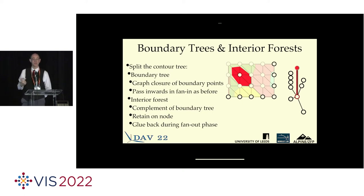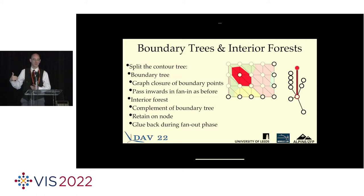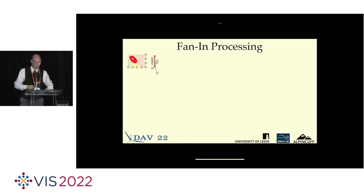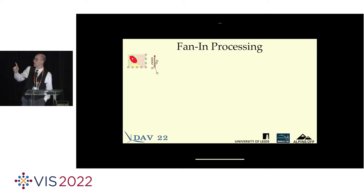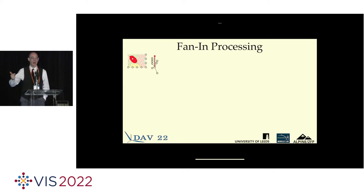Our strategy is to strip out the interior forest at each stage, compute the contour tree of what's left, strip out interior forest again, keep going, and then when we get to the middle, reverse back out, gluing the interior forests that are locally important back in at each level. There's my first block, and the contour tree broken into interior forest in color and boundary tree in black and white. The black and white is what we haven't determined yet; the color are the bits we're now certain of.